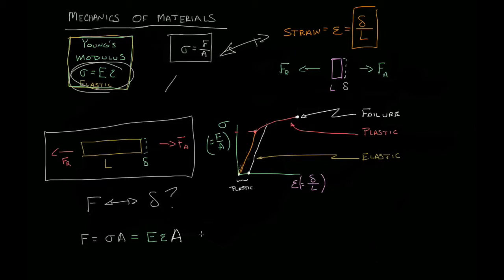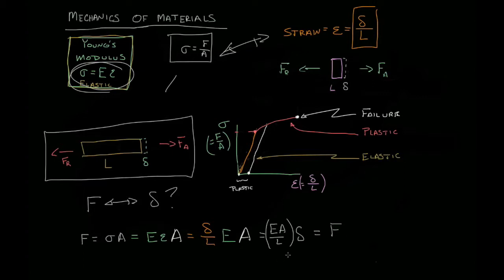When we're not so interested in the strain, we want the actual deformation. So in this case, we're going to substitute out strain for delta over L. In green, we'll keep our Young's modulus, and from our original stress definition, we have A. If we rewrite that, we see E·A over L times delta. Usually we keep the displacement by itself, so we have displacement equals F·L over E·A. Now we have a quantitative relationship between the displacement and the applied force of some material with an area, a Young's modulus, and some length.